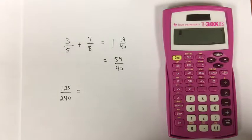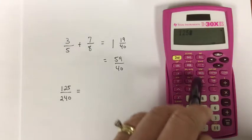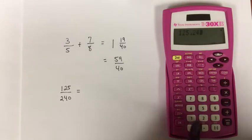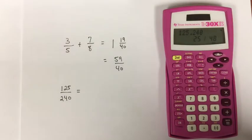You can also have the calculator simplify a fraction for you by simply entering the fraction and pressing equal. I'll enter here 125 fraction 240 equals, and it simplifies it for me to 25 over 48.